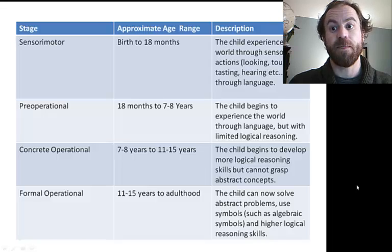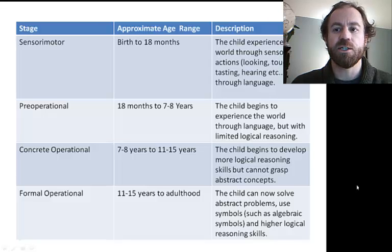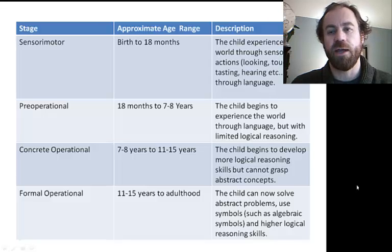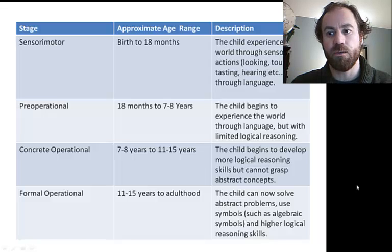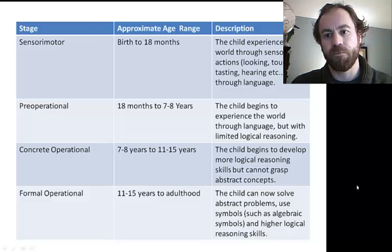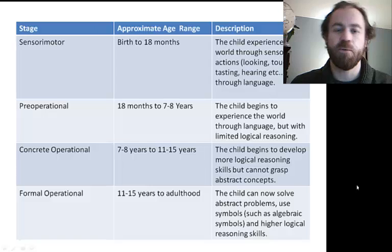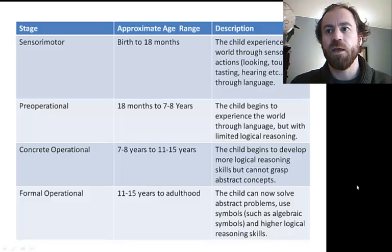According to Piaget, a child's development progresses through four stages, resulting in increases in the child's ability to adapt and understand the world. Piaget framed these stages in terms of problems children can or cannot solve. At each stage, children reorganize their ability to understand the world — it is not that they know less than adults do; it's that they know differently. The first stage is the sensorimotor stage, from birth to about 18 months. At this stage, the child experiences the world through sensory actions — sight, sound, touch.